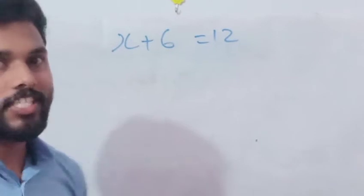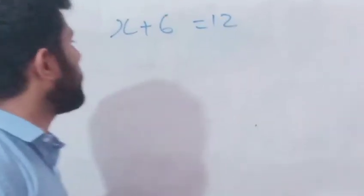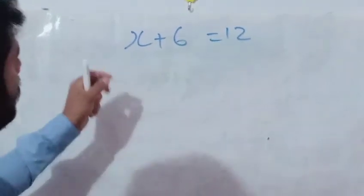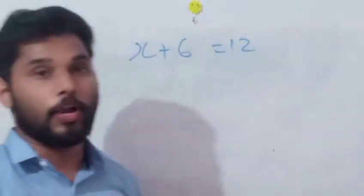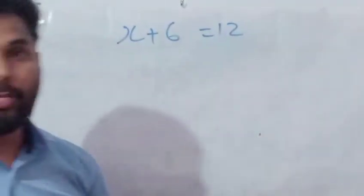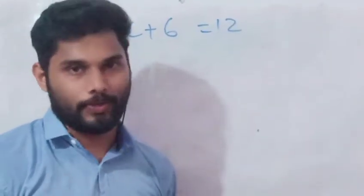Now, X + 6 = 12, question number one. We have to find out the value of X. Which method can we use here? We can do only the balancing method.